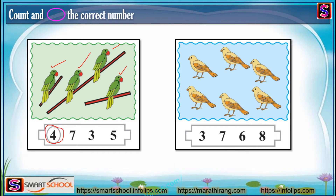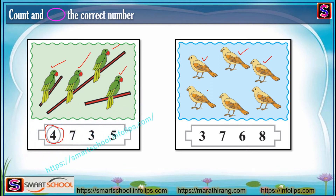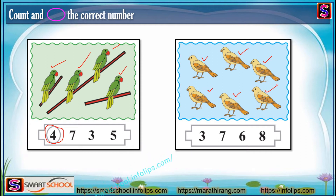This is the second picture. Just count how many sparrows there are: one, two, three, four, five, six. It is six, so just circle the number six.